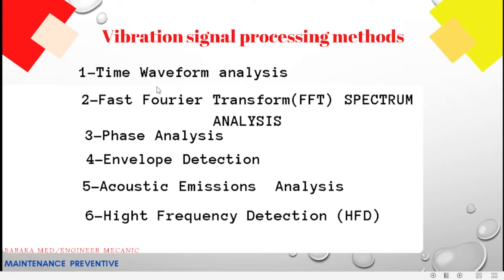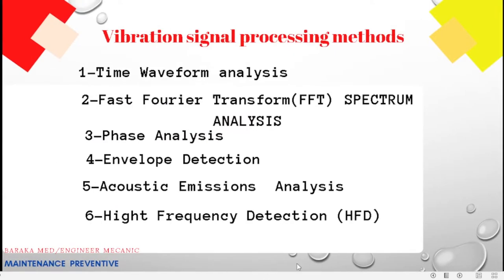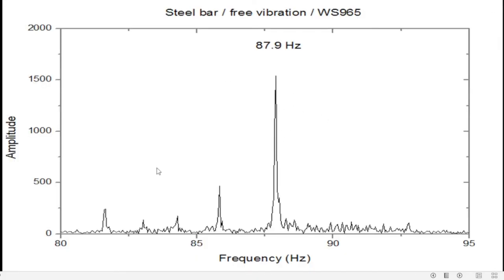The analysis methods include time waveform analysis, FFT spectrum analysis, cepstrum analysis, envelope detection, acoustic emission analysis, and high-frequency detection. The time waveform gives us a global view of the data. We then transform the time waveform to FFT. In the FFT we can detect problem frequencies such as bearing frequencies and gear frequencies.